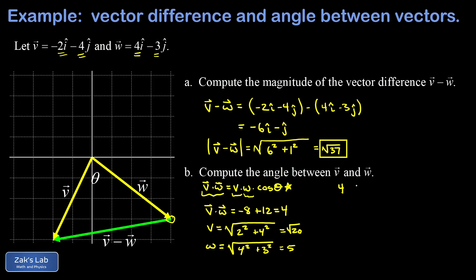We get 4 for v·w, √20 for the length of v, and 5 for the length of w. We have cos(θ) as our only remaining unknown. So we divide by these constants, √20 × 5.